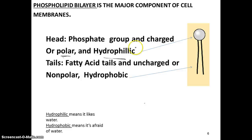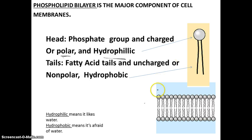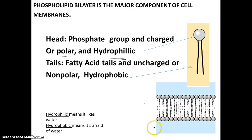So if you place a phospholipid in water, the phosphate heads will face the aqueous environment — the water environment — and then the tails would face each other. And by this arrangement, it forms that barrier.